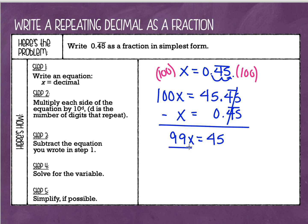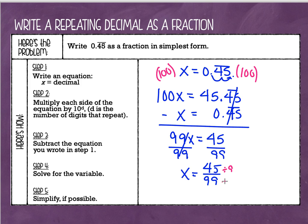From this point, we've got a one-step equation left. So let's divide each side by 99. I'm going to leave it as a fraction, 45 over 99, but I am going to simplify it. So I ask myself, what can I divide both 45 and 99 by? Which would be 9. So 45 divided by 9 is 5, and 99 divided by 9 is 11. So 0.45 repeating as a fraction in simplest form is 5 over 11.